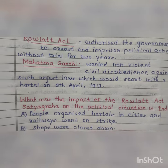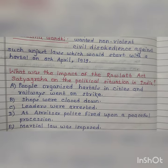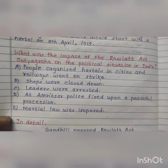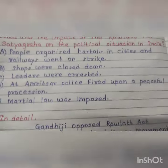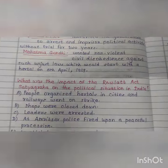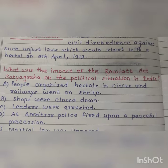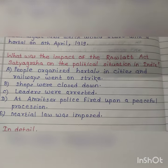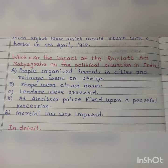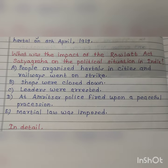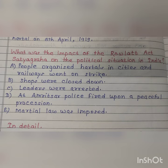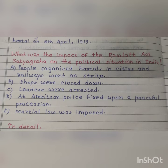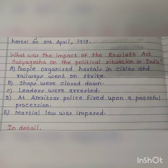Exam question: What was the impact of the Rowlatt Act Satyagraha on the political situation in India? Answer: People organized hartal in cities. Railways went on strike. Shops were closed down. Leaders were arrested. At Amritsar, police fired on a peaceful procession. Martial law was imposed.